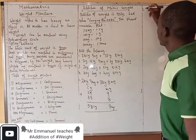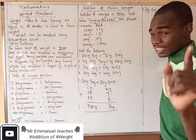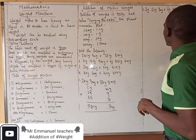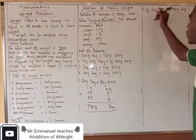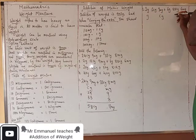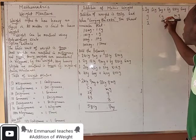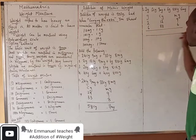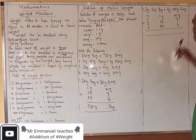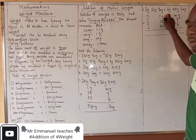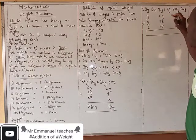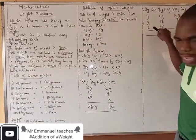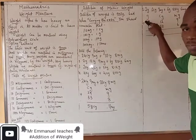The second question: 2 grams 12 centigrams 9 milligrams plus 6 grams 8 centigrams 6 milligrams. Now in this question, we have 3 units: grams, centigrams, and milligrams. We have 2 grams 12 centigrams 9 milligrams, and 6 grams 8 centigrams 6 milligrams. How many milligrams make 1 centigram? 10. So whatever we write in the milligram column is not up to 10. How many centigrams give you 1 gram? 100 — so anything in the centigram column is not going to be up to 100. If you get an answer more than 100, remove that 100 and carry it here.